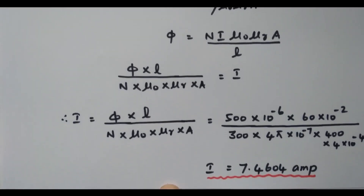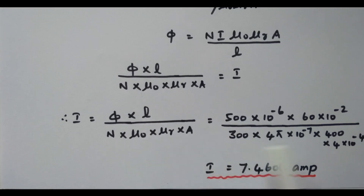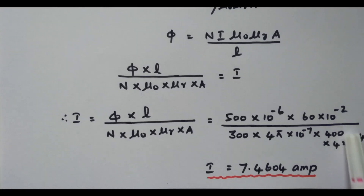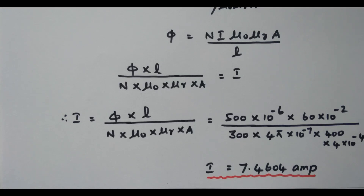Substituting all values: φ = 500 × 10⁻⁶, L = 60 × 10⁻², N = 300, μ₀ = 4π × 10⁻⁷, μR = 400, A = 4 × 10⁻⁴. Simplifying, we get I = 7.464 amperes. In this video we discussed 4 simple problems based on magnetic circuits. More problems are available in other videos — the link is in the description box. Subscribe the channel for more videos. Thank you.